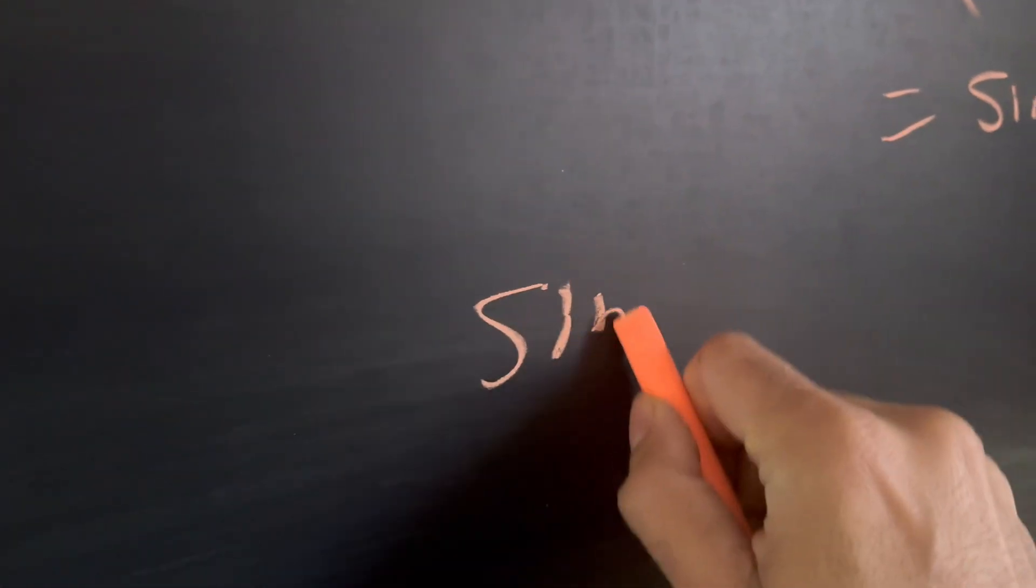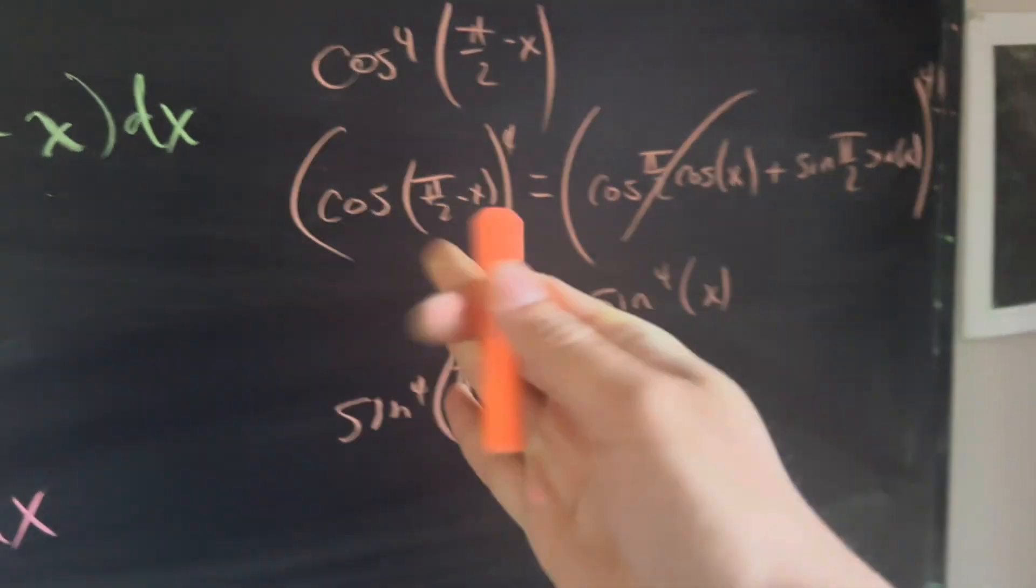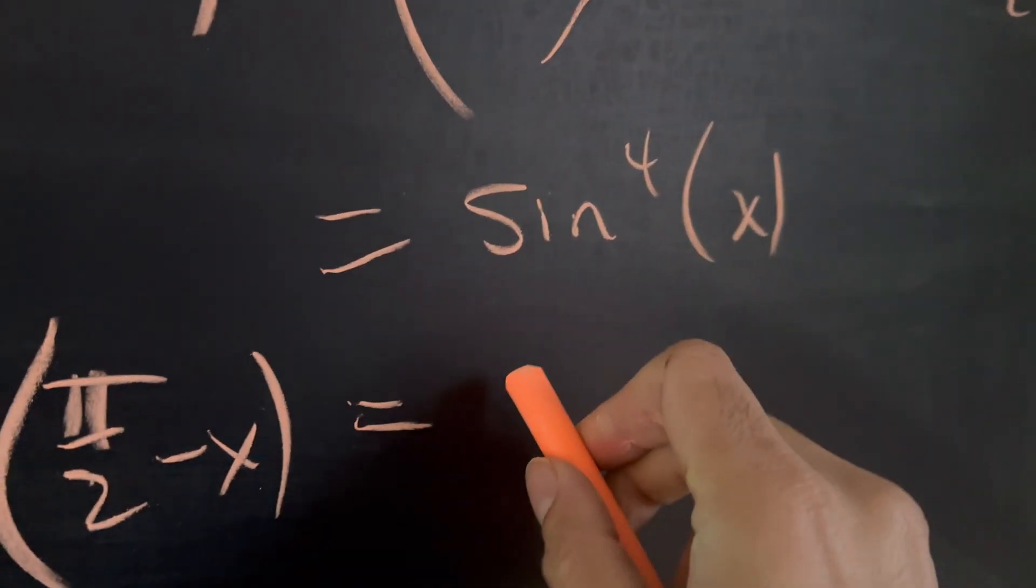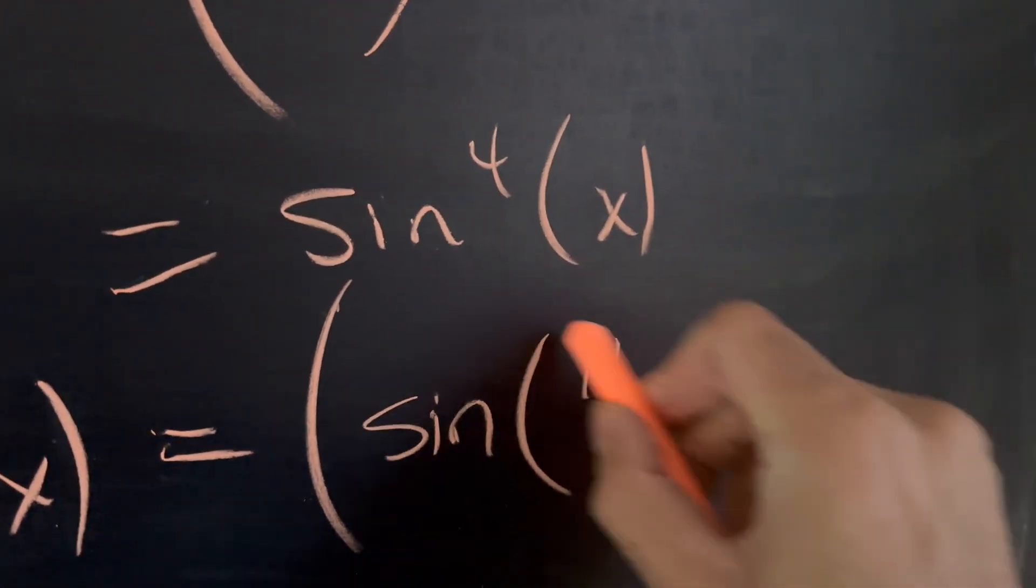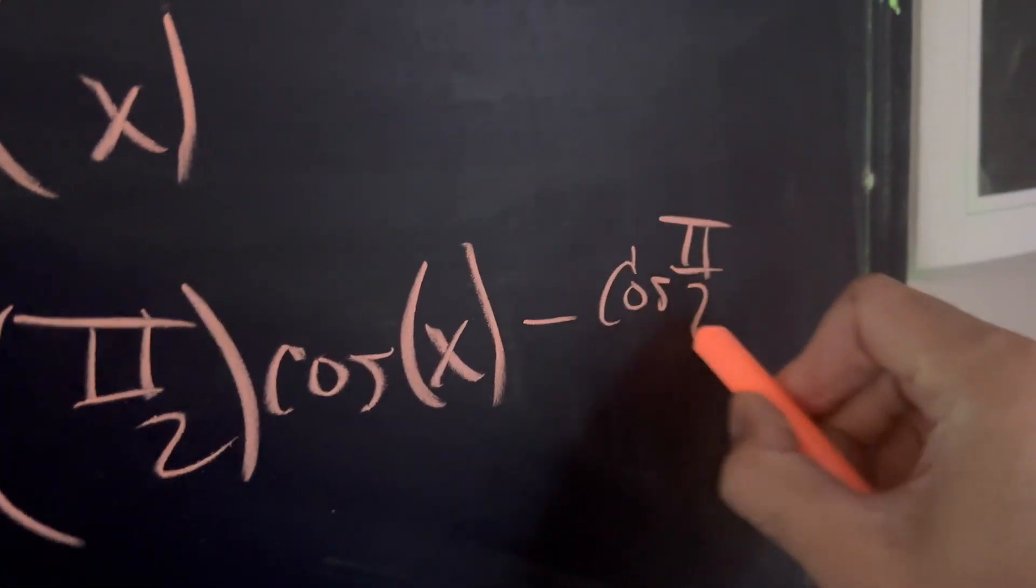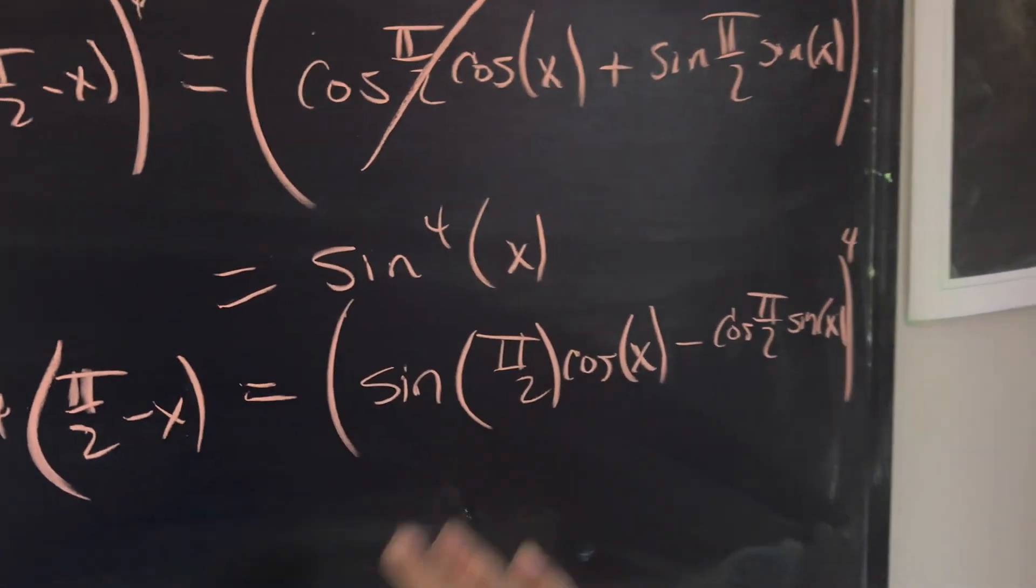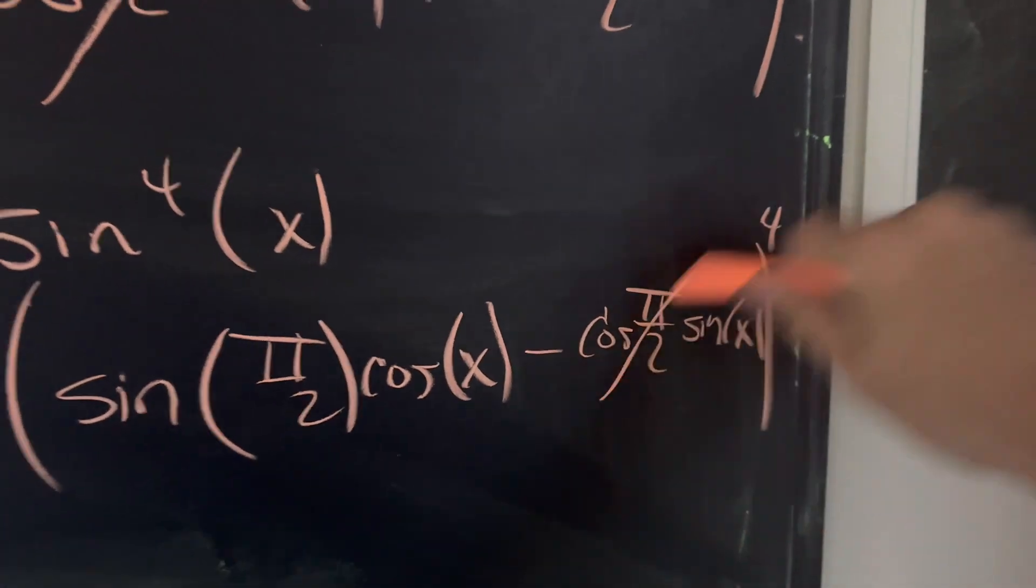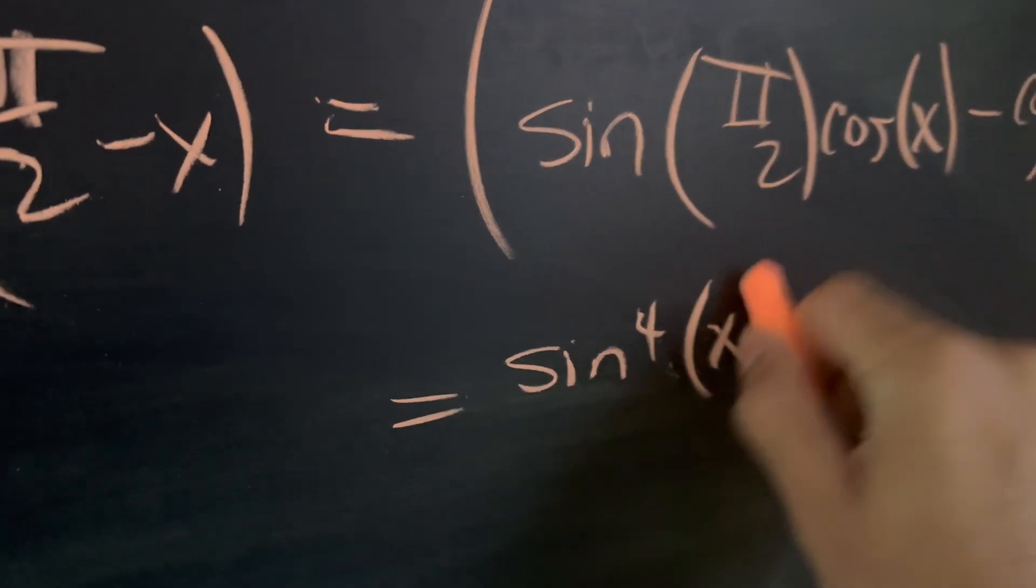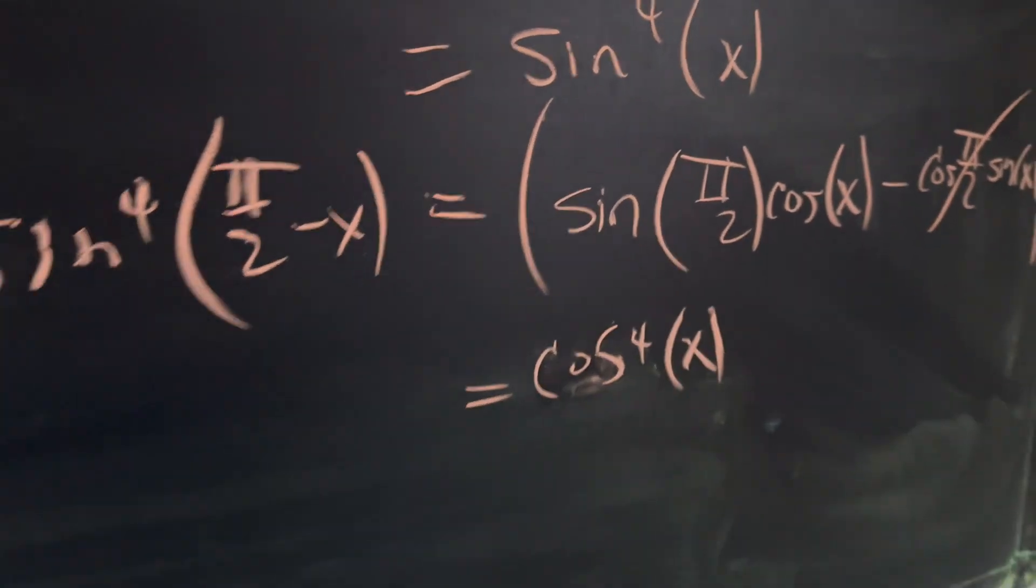And now the same thing for sine to the power of 4 of pi over 2 minus x. I'm just going to go ahead and first take the sum and difference rule and then take the whole thing to the power of 4. And this becomes sine pi over 2 cosine x minus cosine pi over 2 sine x, and this entire thing is to the power of 4. Sine of pi over 2 is 1, so this is just cosine. Cosine of pi over 2 is 0, so that goes away. Again, that's really nice because this entire expression now becomes cosine to the power of 4 of x.